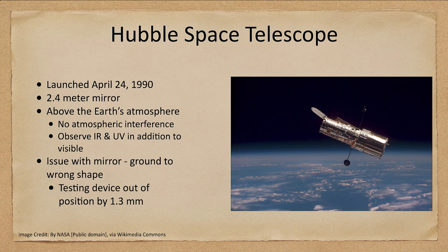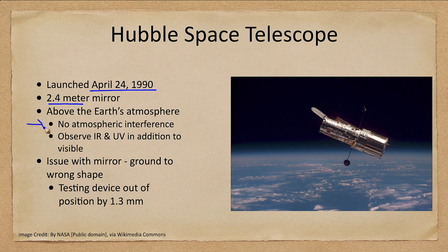We can also put visible light telescopes in space. The Hubble Space Telescope, launched in April 1990 with a 2.4 meter mirror, is one of these. Being above Earth's atmosphere means there is no interference, so we can achieve the theoretical resolution we discussed previously without worrying about atmospheric seeing. In addition, some parts of the infrared and ultraviolet are also accessible, allowing a wider field of view.